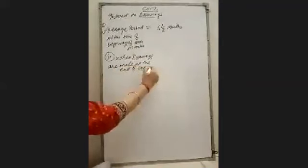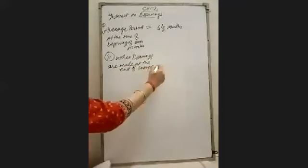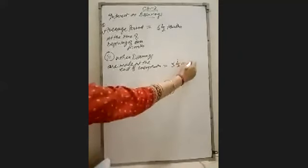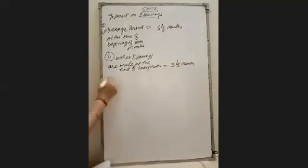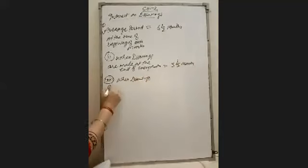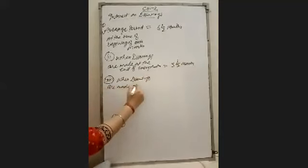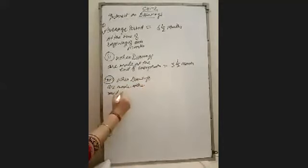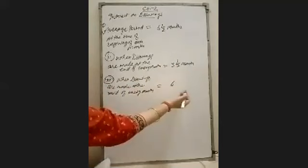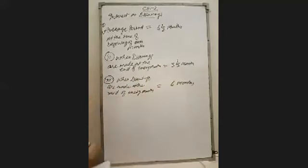When drawings are made at the end of every month, the average period was 5.5 months. And the third point: when drawings are made at the mid of every month, the average period is 6 months. Now today we will discuss this practically with the next illustration.